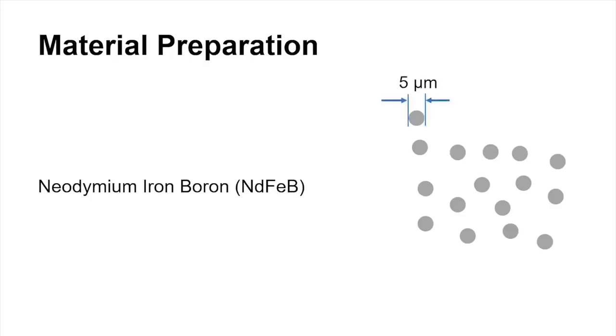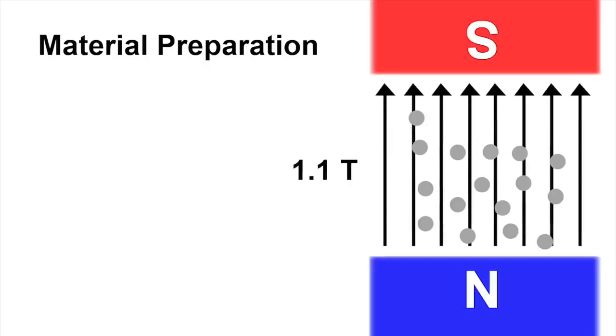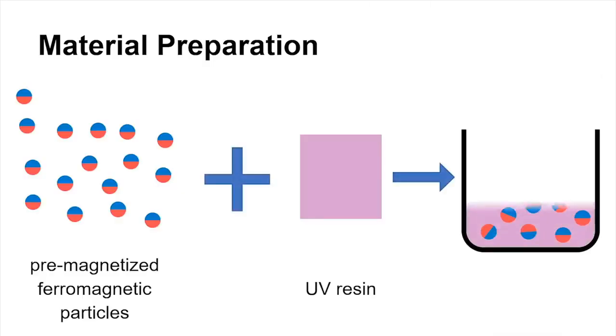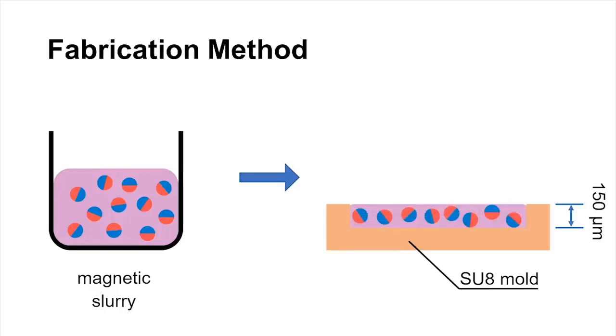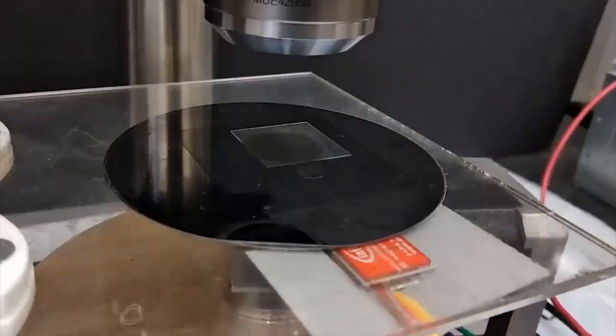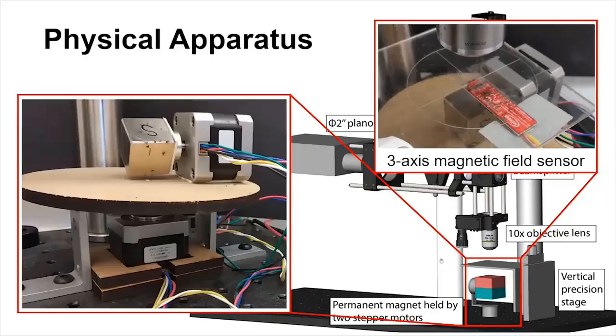Tiny rare earth magnets are magnetized in a strong magnetic field, then they're mixed into a UV resin that will harden when exposed to UV light. The mixture is poured into a mold and placed on a stage below which is a rotatable permanent magnet.